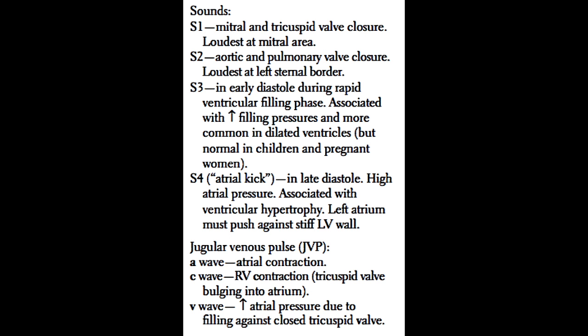S1, the first heart sound, is caused by closure of the mitral and tricuspid valves, and is loudest at the mitral valve listening post — the mid-axillary line in the fifth intercostal space. S2, the second heart sound, is caused by closure of the aortic and pulmonic valves, and is best heard at the upper sternal border on both the left and right sides. S3, the third heart sound, is heard in early diastole. In patients above the age of 30, it is considered pathologic and is associated with elevated filling pressures and congestive heart failure. S3 is considered normal in children and pregnant women.